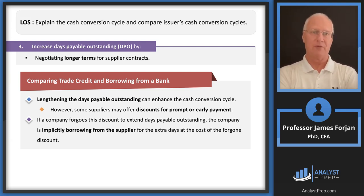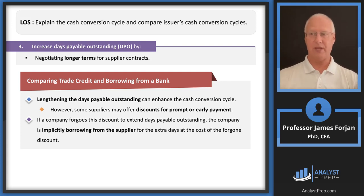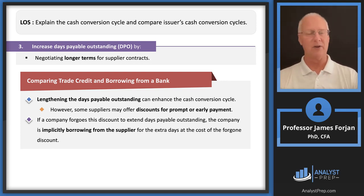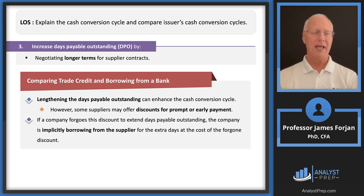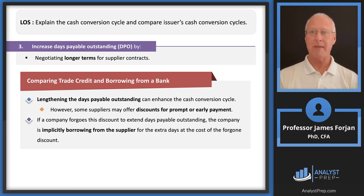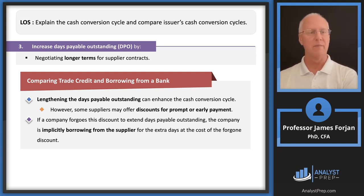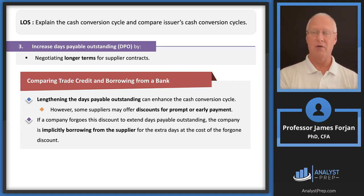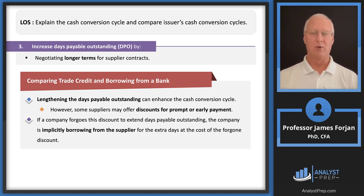One cool thing about working capital and cash conversion cycle management is that sometimes we extend credit and receive credit, but then there'll be an offer for a discount — like paying your property tax early for a discount. It's almost always beneficial to take advantage of that discount. But suppose you don't have the money for the early discounted payment. Then you ask yourself: should we go to the bank and borrow this capital so we can take advantage of the discount? The banker will charge an interest rate, assuming it will be a low interest rate for a short-term loan.